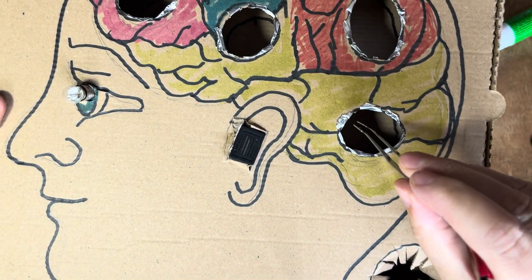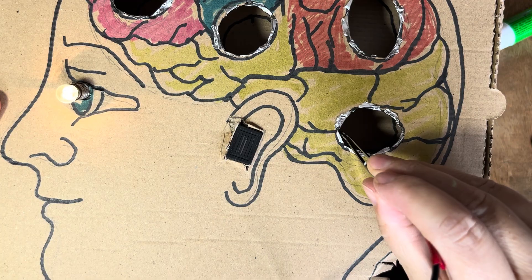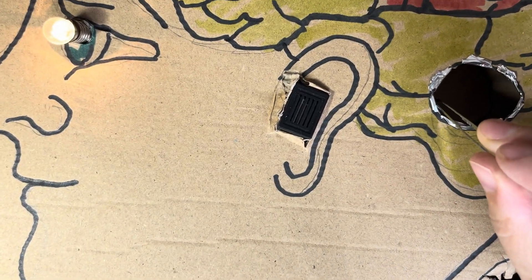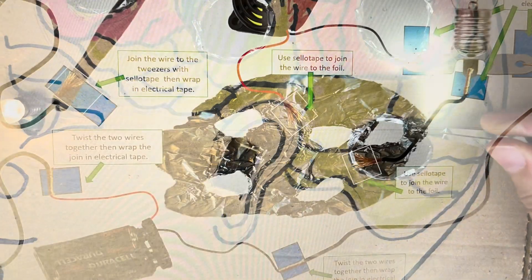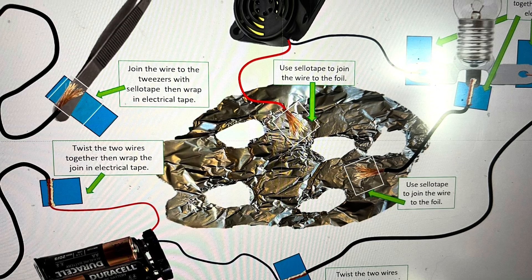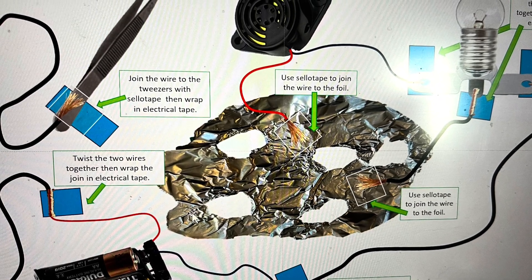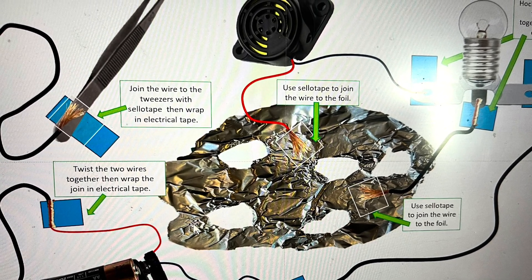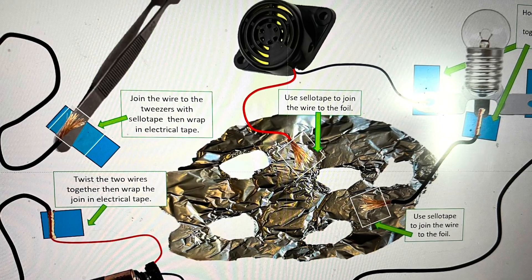So the buzzer and the light are coming on when I connect the circuit by touching the edges of a cavity with my tweezers. I have done a printout for you to have on your desks to help you with the circuit so don't worry if you can't remember all the details of this film.